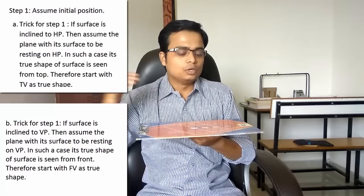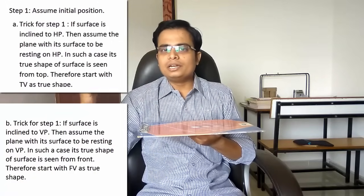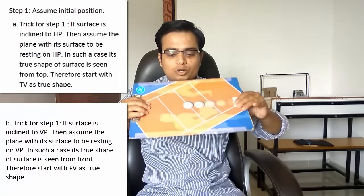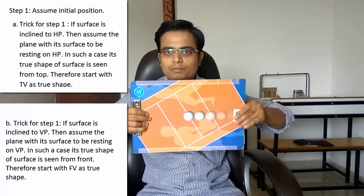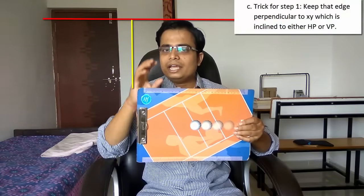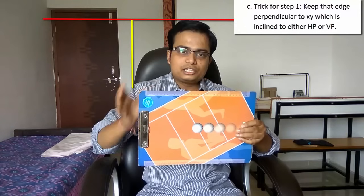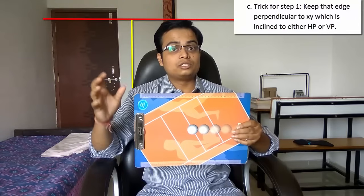The true shape of the surface can only be seen from the top, so in step one we begin by making the top view first. If you extend the smaller edge to the XY line, you can see it is inclined at 90 degrees to the XY line. Always remember: whichever edge in step three is inclined, in step one it must be perpendicular to the XY line. Since the smaller edge makes 30 degrees with the VP in step three, it must be kept perpendicular to XY in step one.